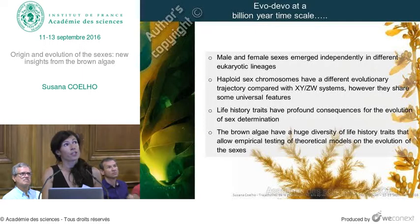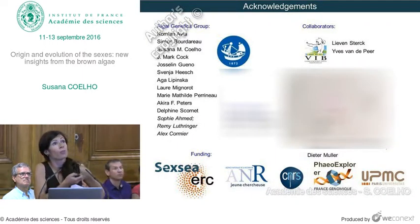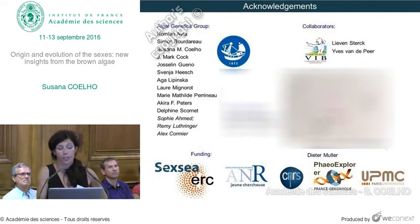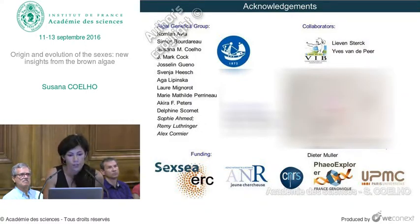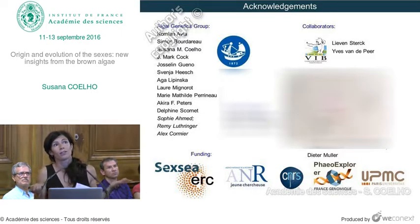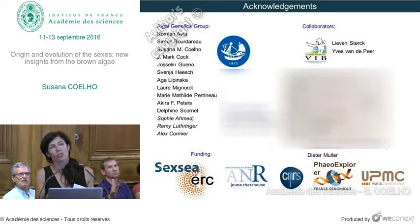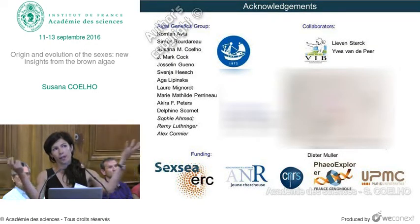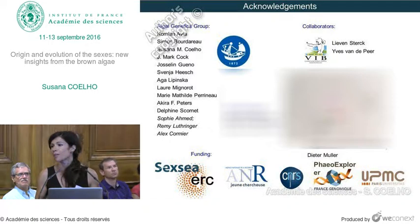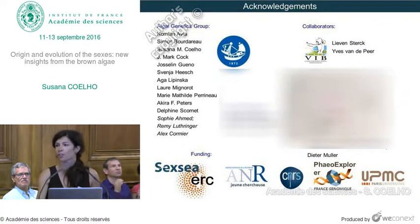To wrap up: sexes have emerged independently and repeatedly in different lineages of eukaryotes. These haploid sex chromosomes have a different evolutionary history compared with XY and ZW systems, but there are some universal features — possibly the same types of genes recruited repeatedly as sex-determining genes. Life history traits have profound consequences on the evolution of sex determination, and brown algae are a particularly interesting group because they show a large variety of life history traits that we can correlate with the evolution of their sex chromosomes. I'll finish by showing a short film of sex in Ectocarpus — female and male gamete fusion. The females attach to the substrate, produce a pheromone that attracts the male, and then they fuse together.